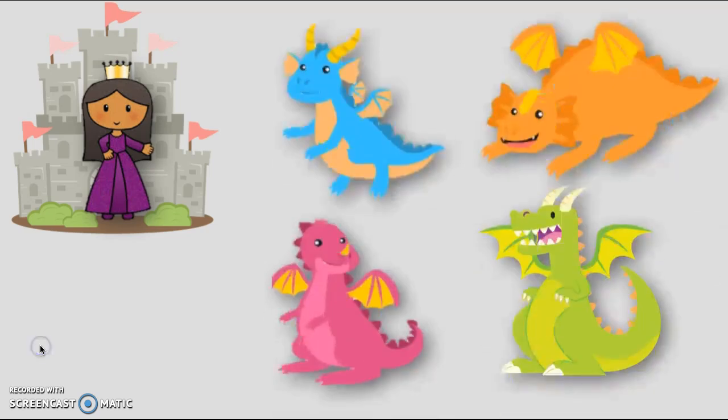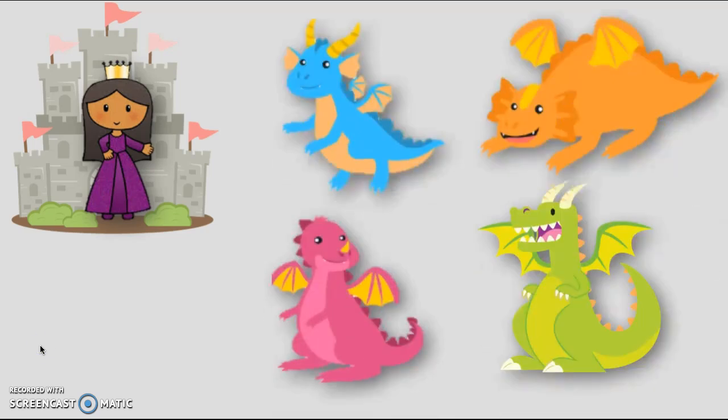Once upon a time there was a princess that lived in the castle. There she is. One day the princess looked outside and she saw four dragons coming for a visit. Oh that sounds like the pits. Then all of a sudden one more came. How many dragons all together visited the princess that day?